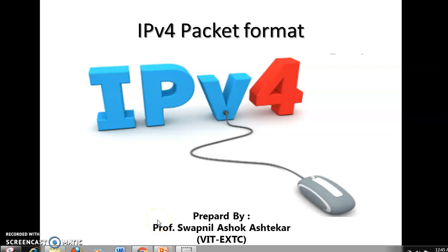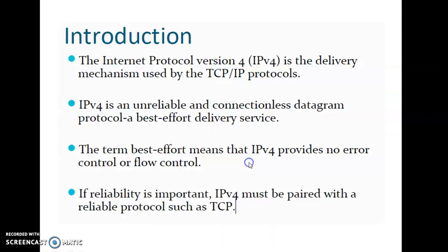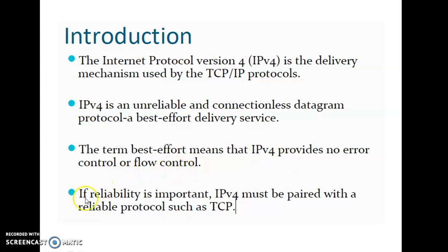Hello students, today I have prepared a video lecture on IPv4 Packet Format. The Internet Protocol version 4 is the delivery mechanism used by the TCP/IP protocols. IPv4 is an unreliable, connectionless datagram protocol which is a best-effort delivery service, meaning it does not guarantee that data would be delivered 100%. Best effort means IPv4 provides no error control or flow control. If reliability is important, IPv4 must be paired with a reliable protocol such as TCP.